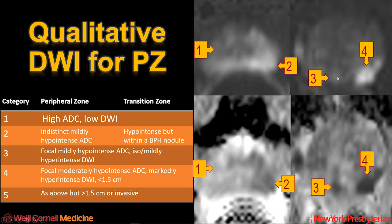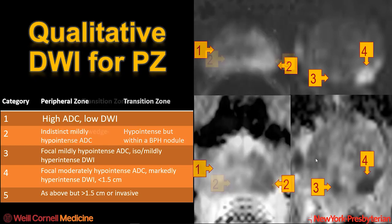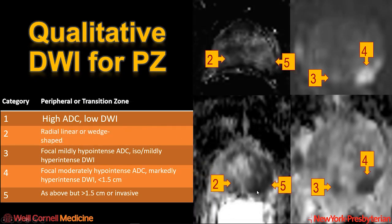If it's not the brightest thing on the high B-value DWI, it would be category 3. The brightest thing on the high B-value DWI and darkest thing on the ADC map is category 4. When it's very large or invasive, that would be category 5. One addition in PIRADS version 2.1 is that a linear structure in the peripheral zone is also category 2.